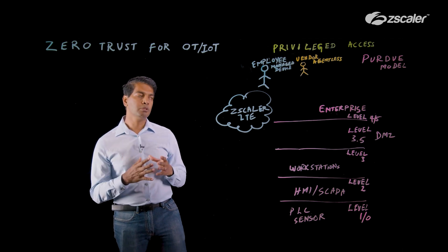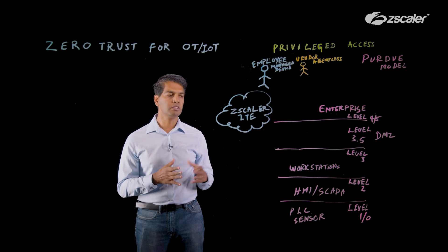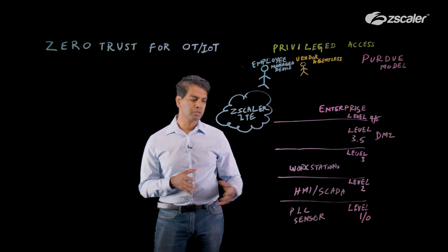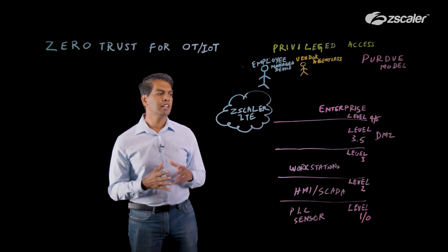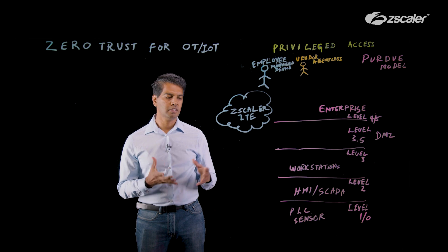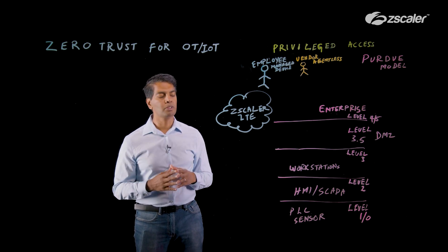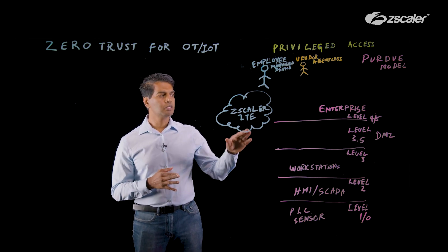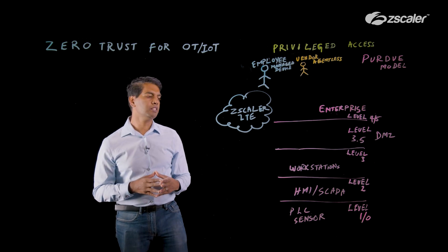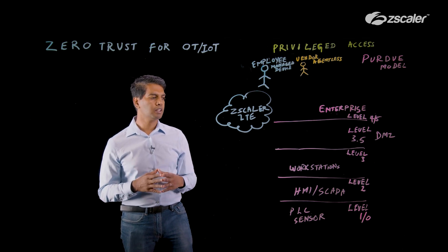This use case is about employees or vendors requiring access to your OT systems. What I've drawn here is what's called a Purdue model of security. This is fairly common in a manufacturing environment — your setup for physical processes using that Purdue model of security, segregated into different layers. At the bottom-most layer is what we call the PLCs and sensors. You have the HMIs and SCADAs, or the control portion of it.